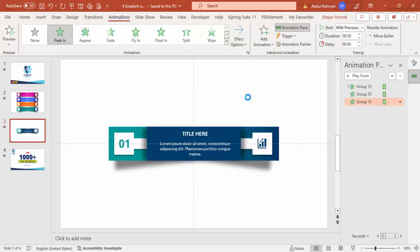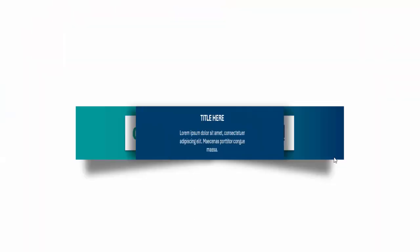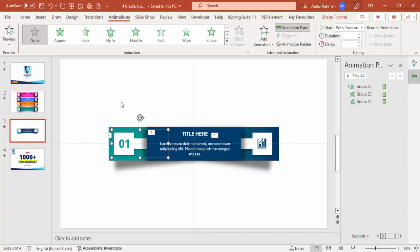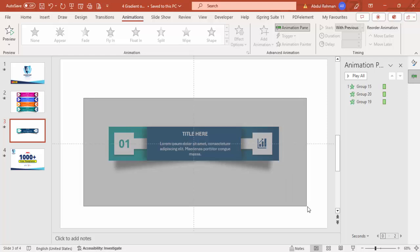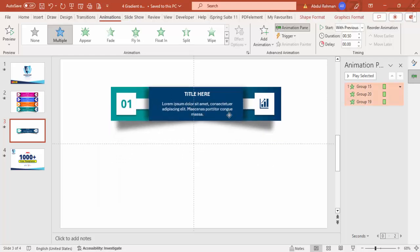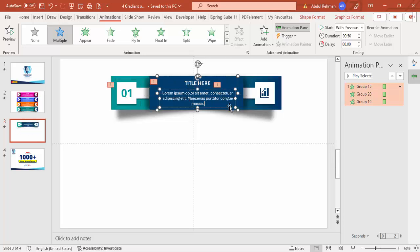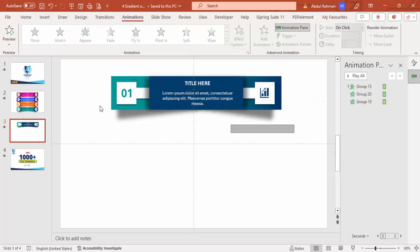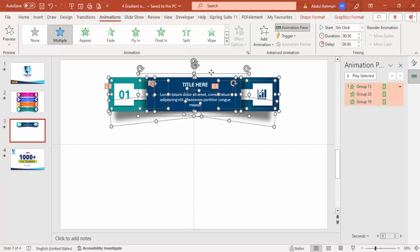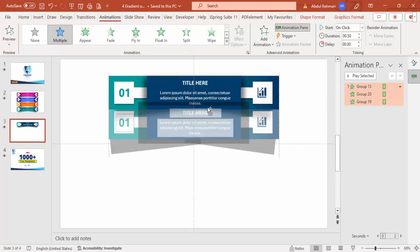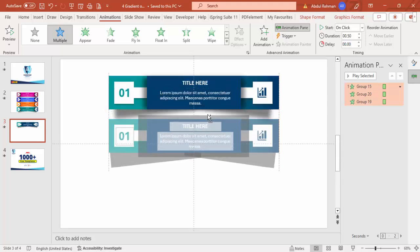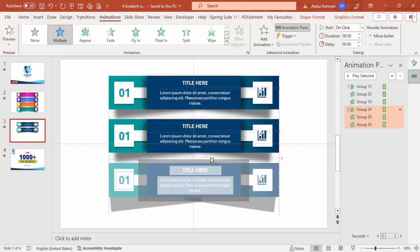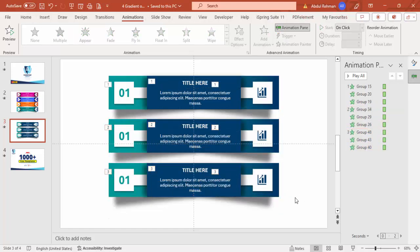Use the Animation Painter and apply it to the other shape — the right side should peek in from the right. If I play it, you can see it comes in like this. Now I'm going to select all the shapes and drag them up, then hold Ctrl+Shift and drag them down to create the second, third, and fourth options.